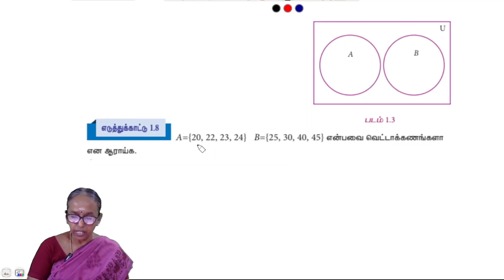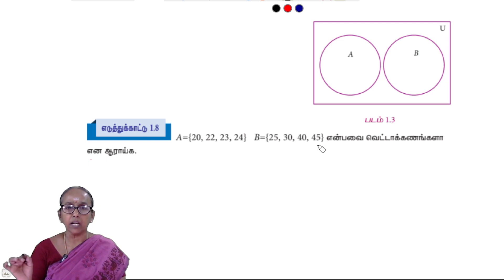A is equal to 20, 22, 23, 24. B is equal to 25, 30, 40, 45.